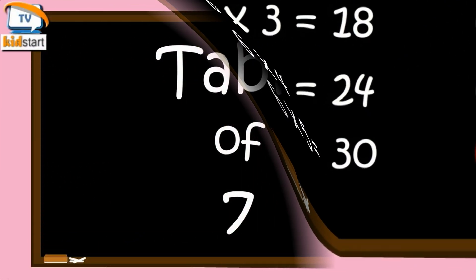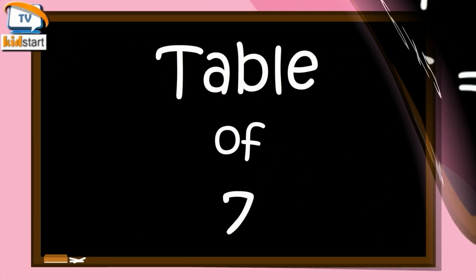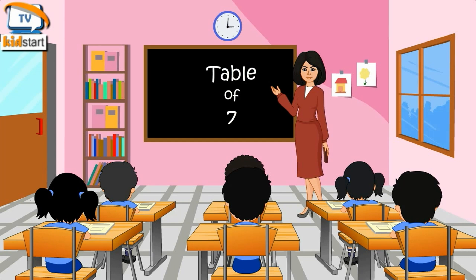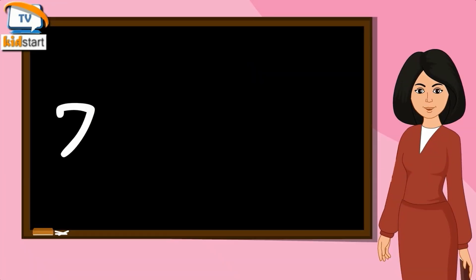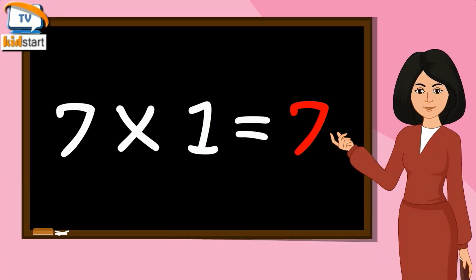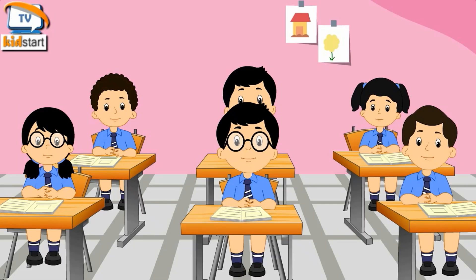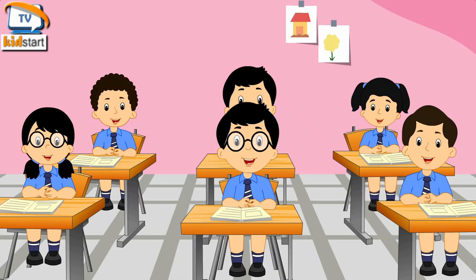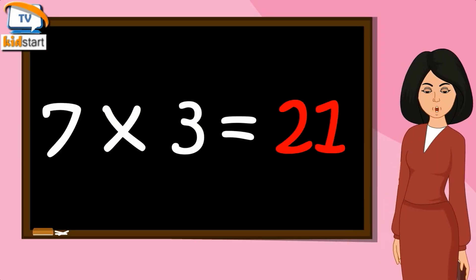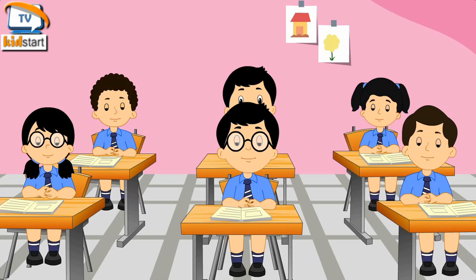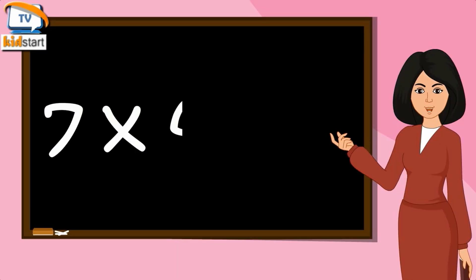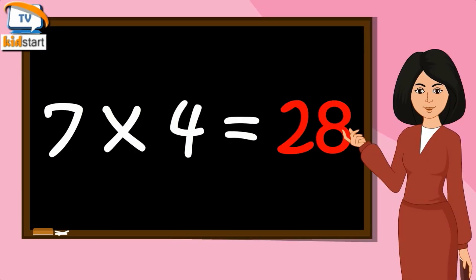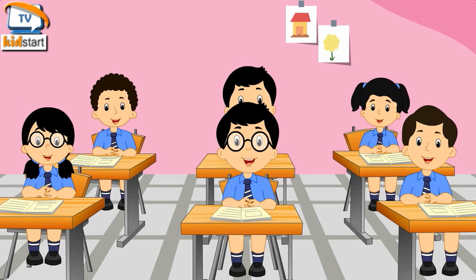Table of 7. 7 ones are 7, 7 ones are 7. 7 twos are 14, 7 twos are 14. 7 threes are 21, 7 threes are 21. 7 fours are 28, 7 fours are 28.